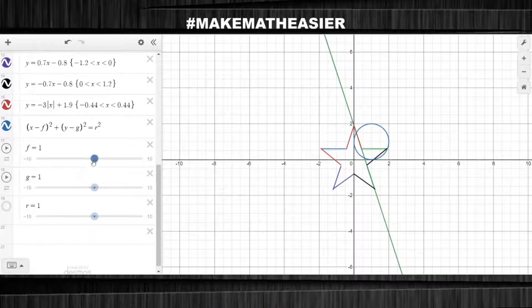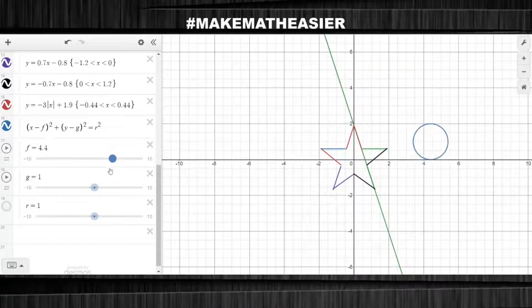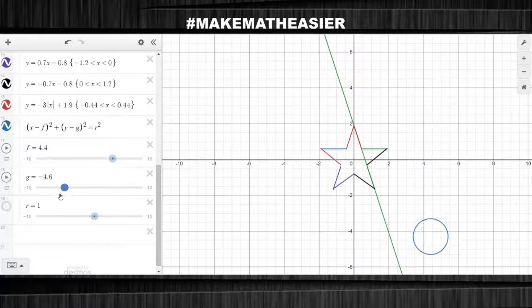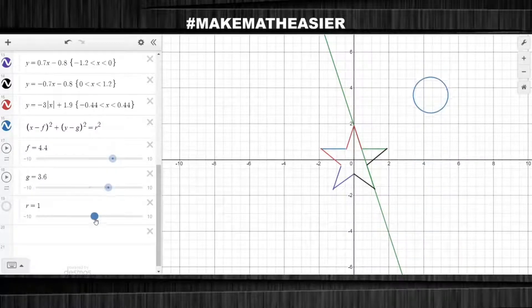The F number moves the circle right or left. The G number moves the circle up or down. And the R number makes the circle bigger or smaller.